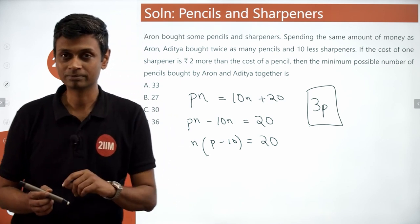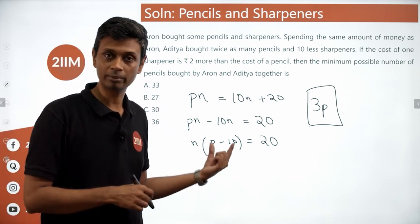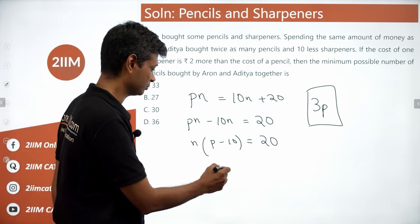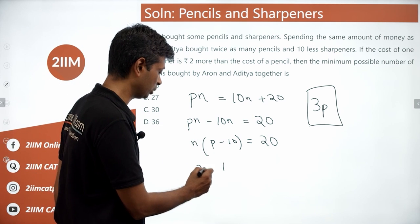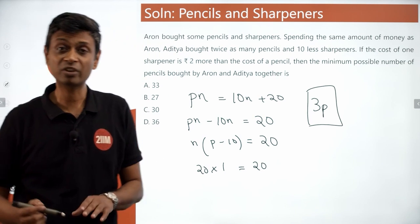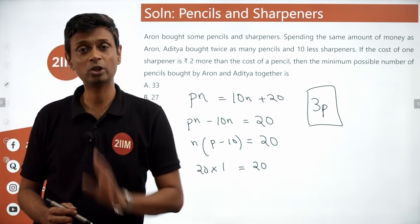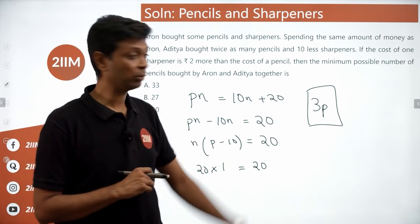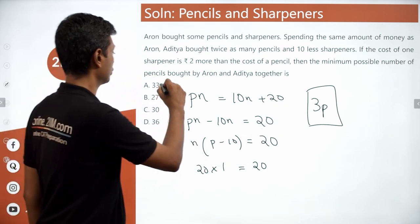P has to be an integer. It cannot be 10 or lower; this will become 0 or negative. Put P as 11. This becomes 11 minus 10, which is 1, and n is 20. 20 into 1 equals 20. P as 11 seems to satisfy this equation. If P were 11, 3P would be 33. That's the choice we are looking for.